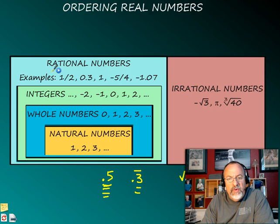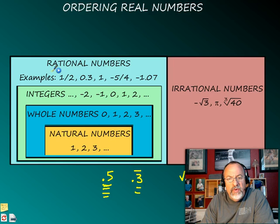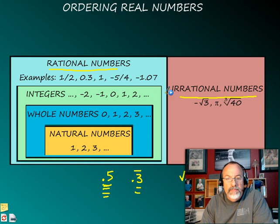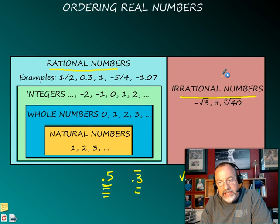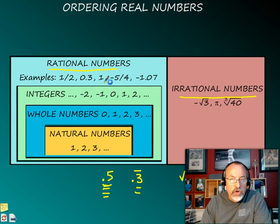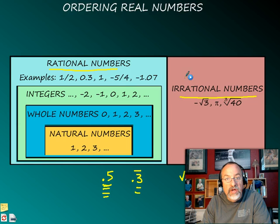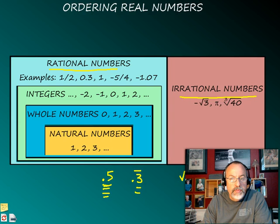One thing I want you to notice is that rational numbers and irrational numbers are separate sets, meaning a number that's rational cannot be irrational at the same time, and a number that's irrational cannot be rational at the same time. So when you go to identifying these numbers as either rational or irrational, make sure you don't put both because that's impossible.